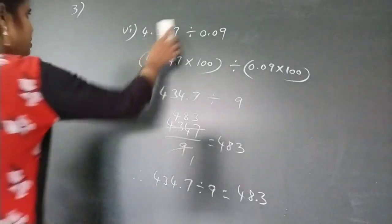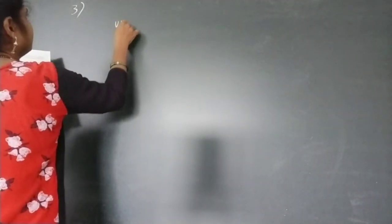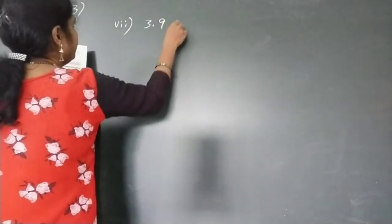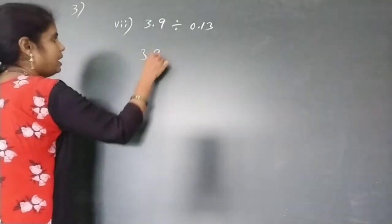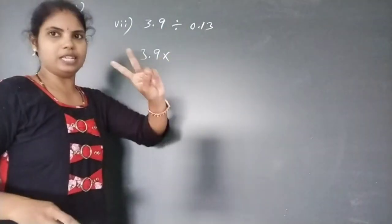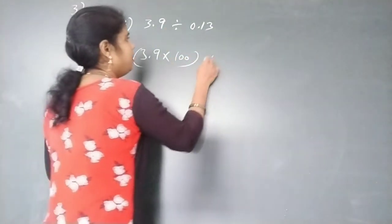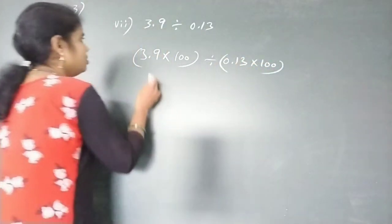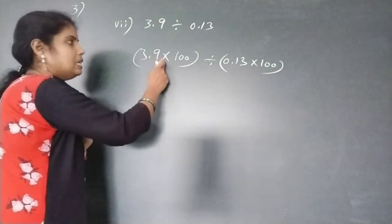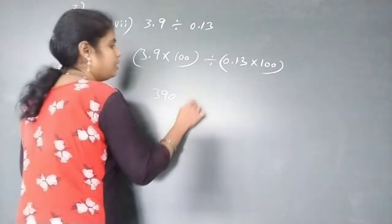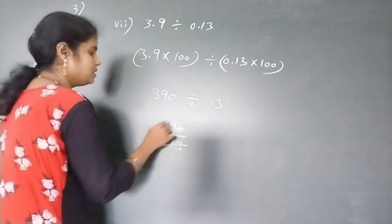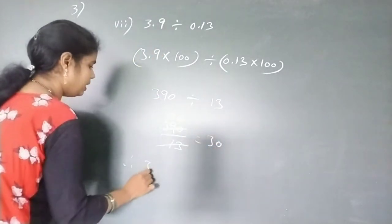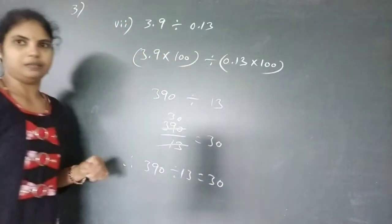Next, seventh problem: 3.9 divided by 0.13. The divisor 0.13 has 2 decimal digits, so multiply both by 100. 3.9×100 = 390, and 0.13×100 = 13. So 390 divided by 13 equals 30. The answer is 30.